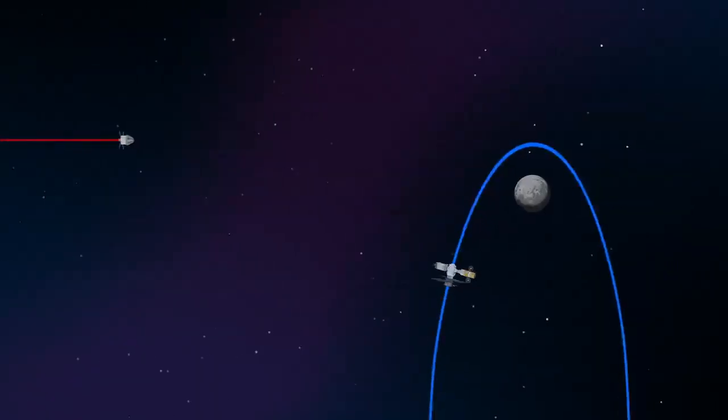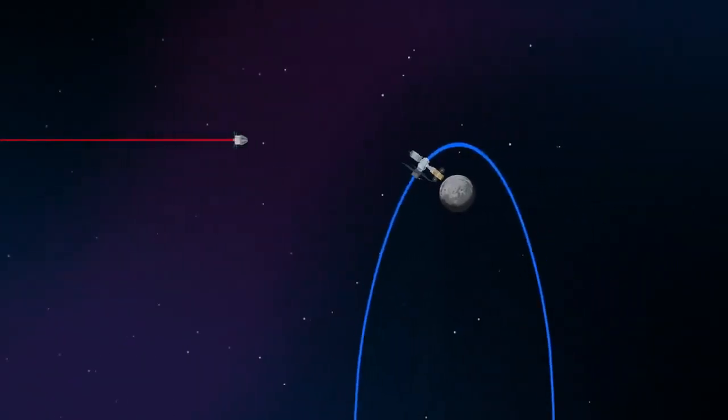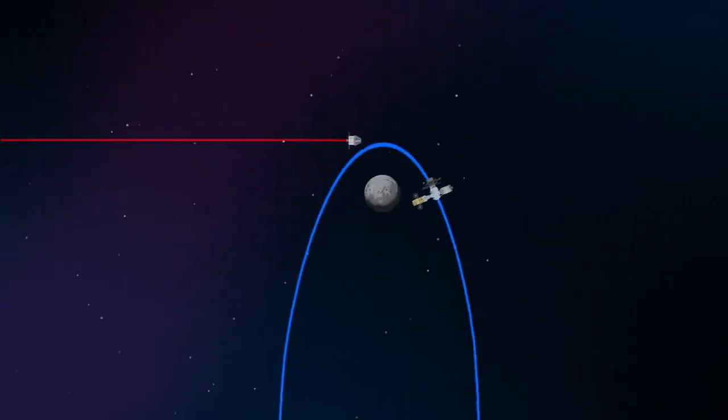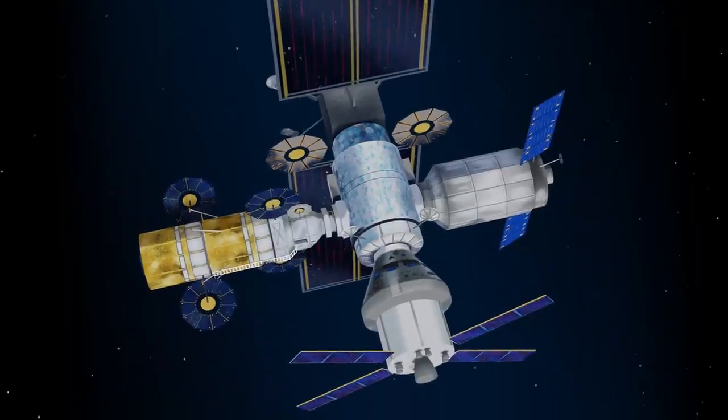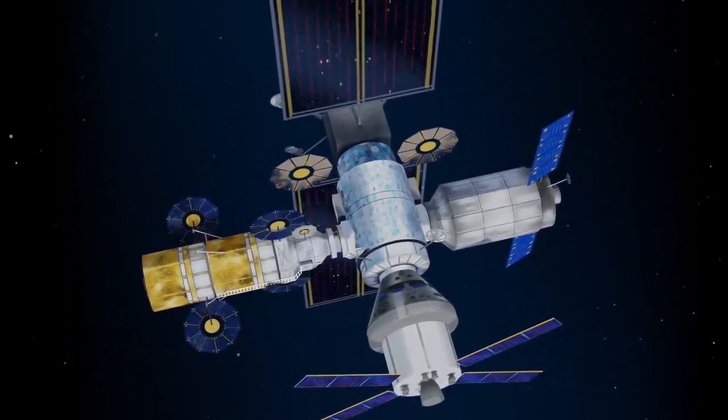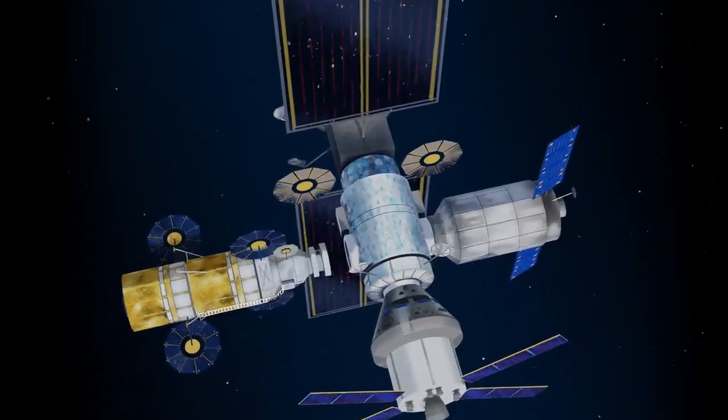Returning to our crew as they approach Gateway, the Orion must match the elliptical orbit of the station in order to successfully dock. Once on board, pre-selected crew members transfer to the lunar lander, while those assigned to Gateway remain on station.